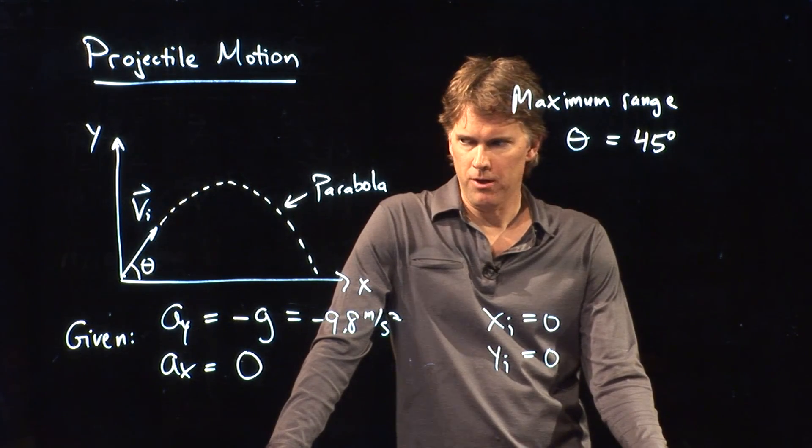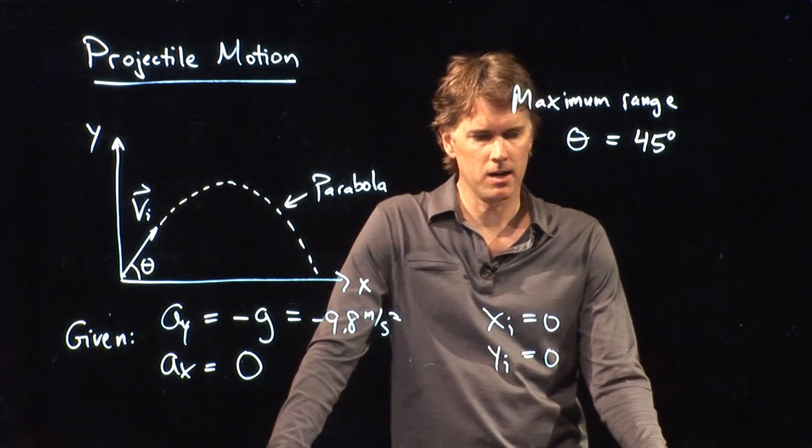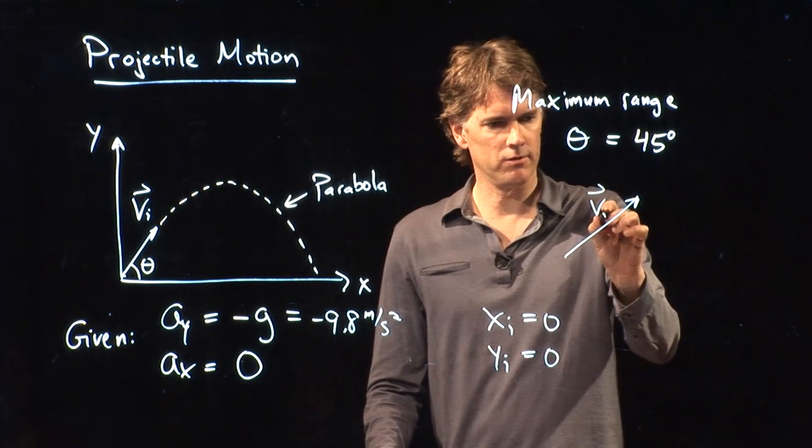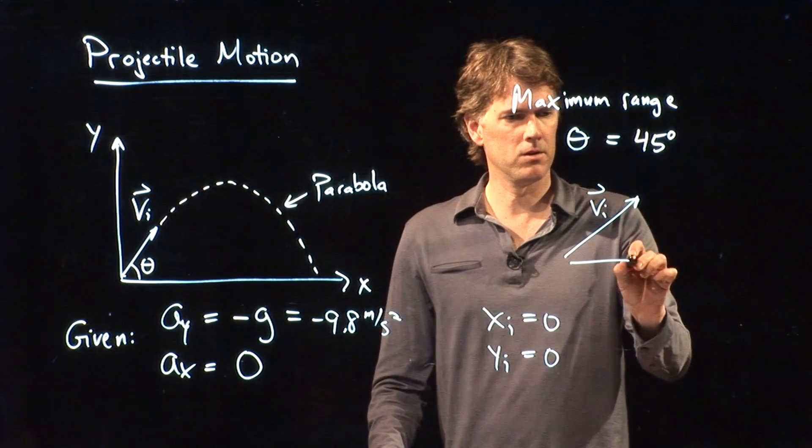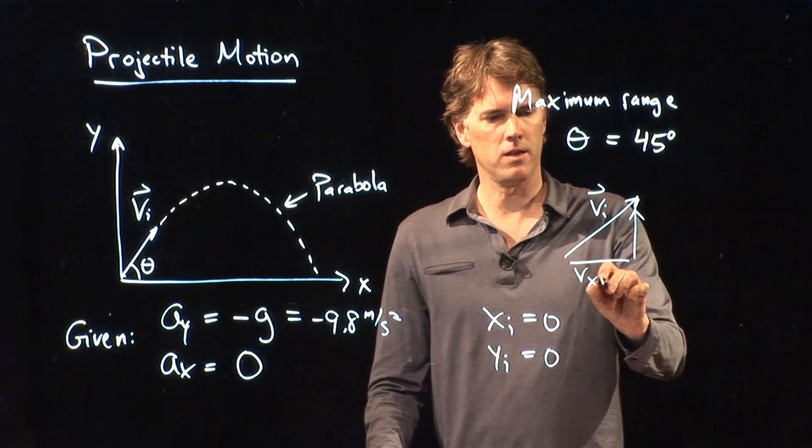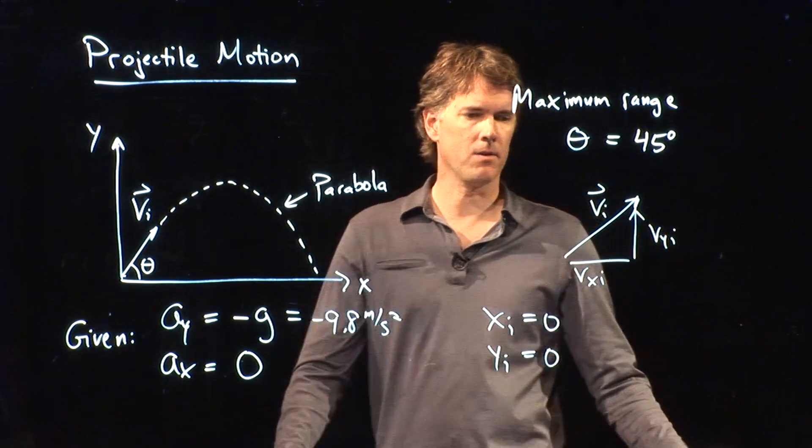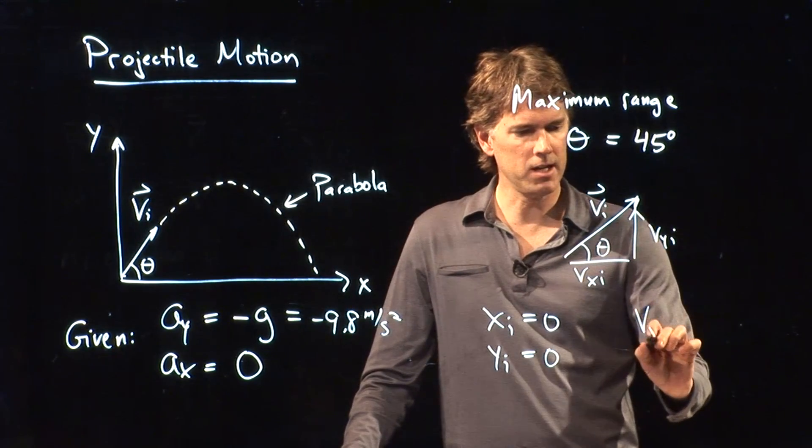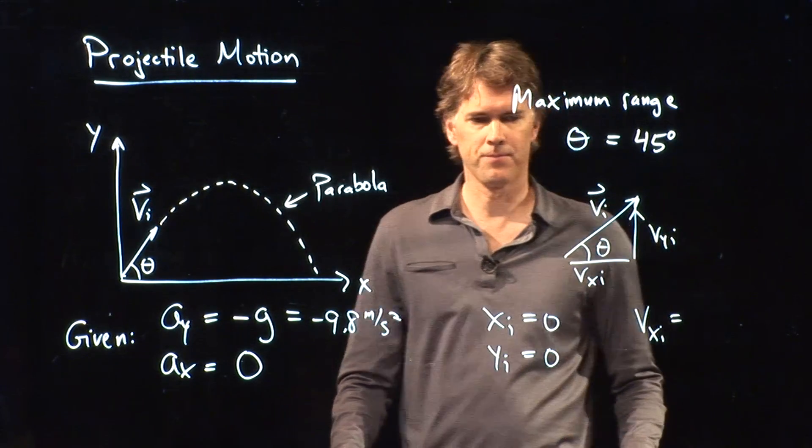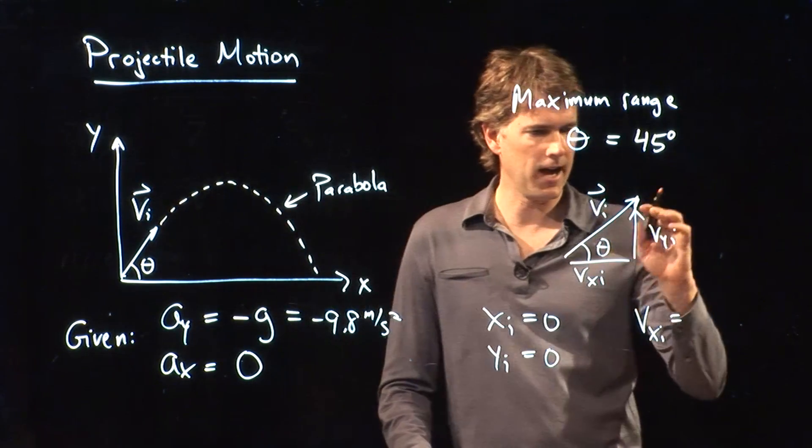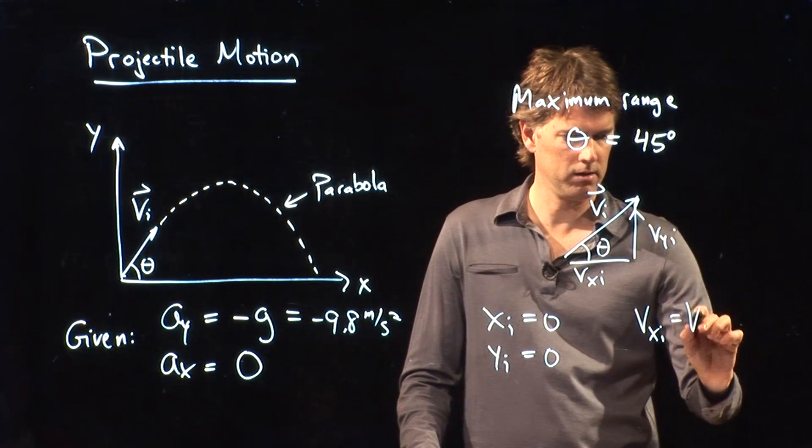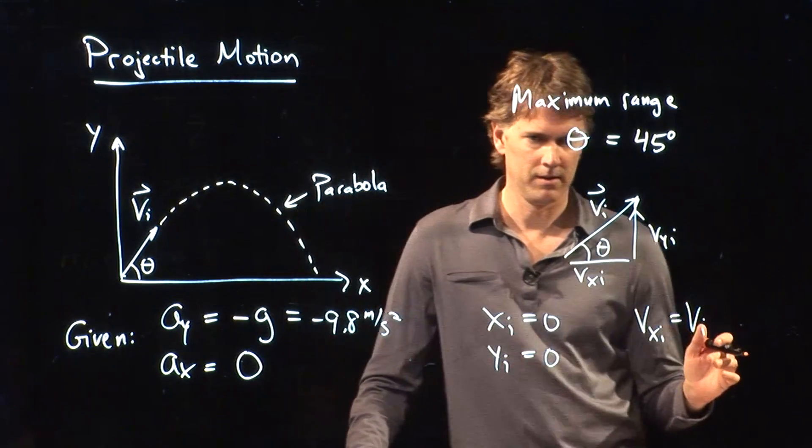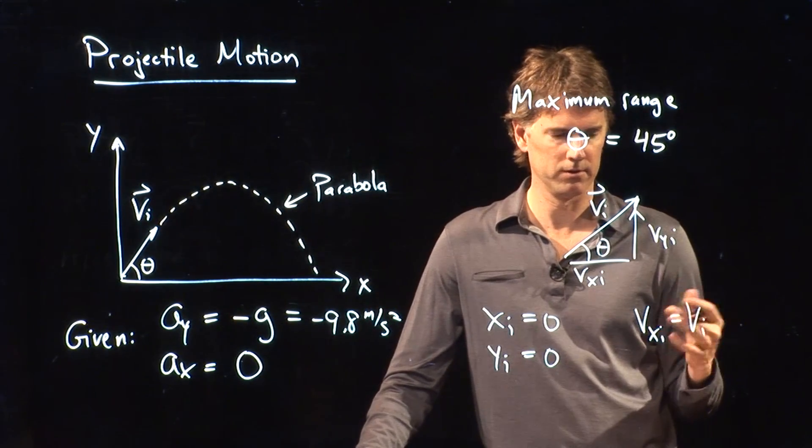And then we can do one more thing. We can break up the velocity v, that initial velocity, into components. One in that direction and one in that direction. And if that is angle theta, then what is vxi equal to? Is it vi sine theta or vi cosine theta? What do you think? You guys remember SOHCAHTOA? Remember her? She's cool. You should get to know her.